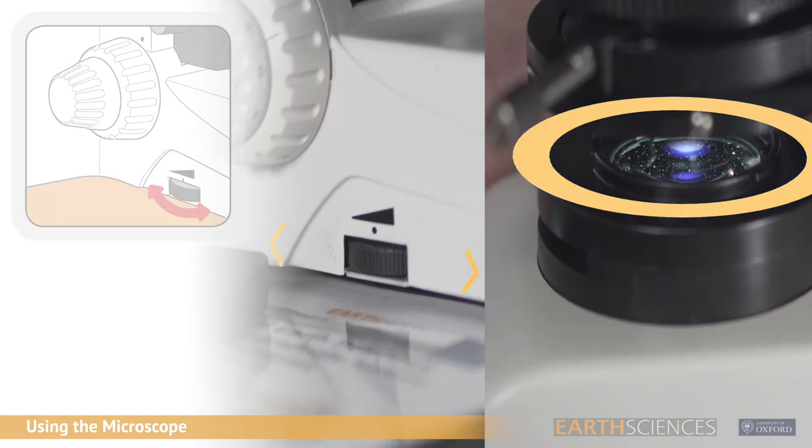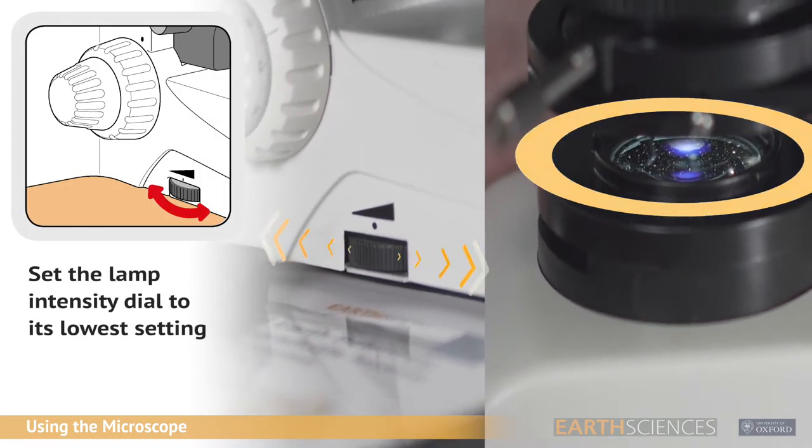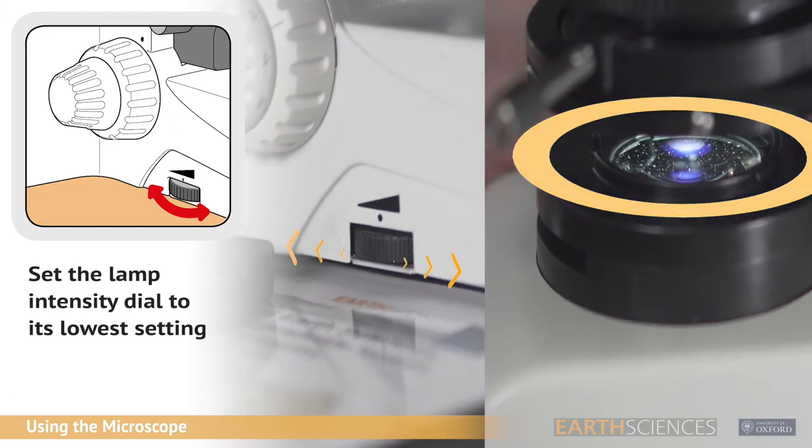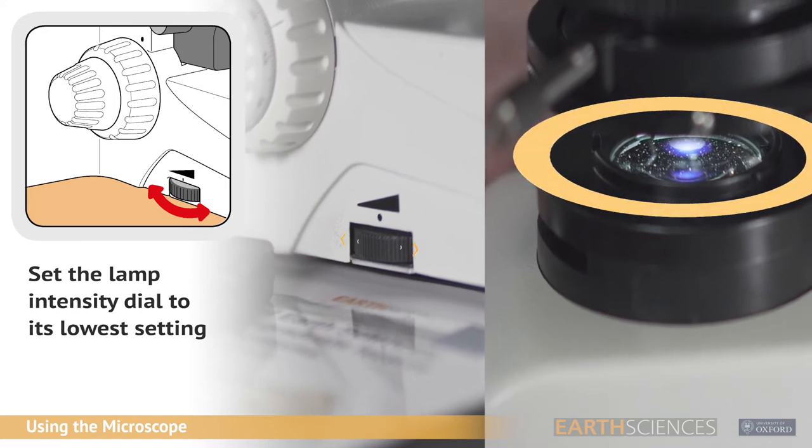On the left hand side of the base is the lamp intensity dial. It's good practice to leave the dial rotated to the lowest light intensity. This will ensure that the user's eyes are protected before viewing. The light intensity can be seen at the top of the base.